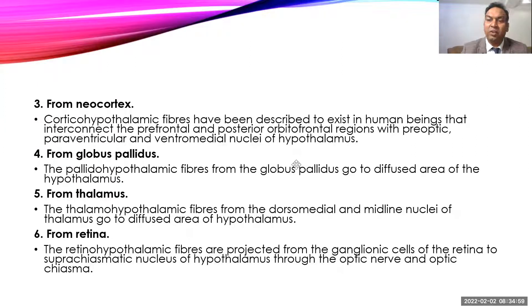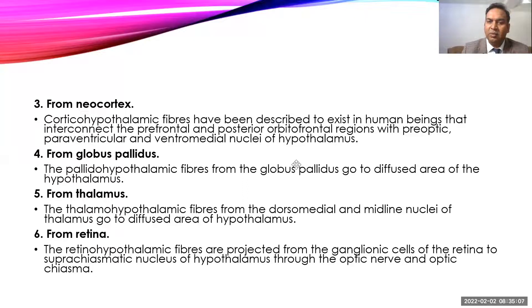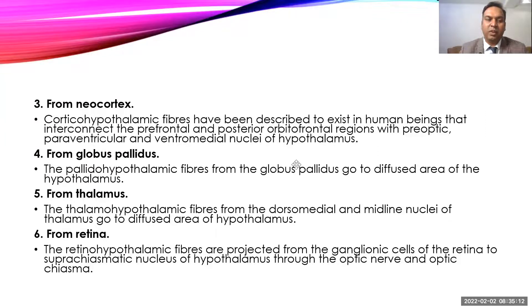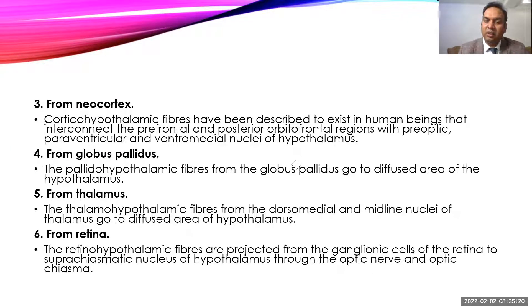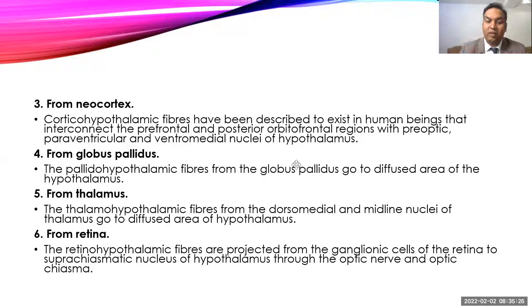The hypothalamus also gets thalamohypothalamic fibers from the dorsal and midline nuclei of the thalamus projecting to different hypothalamic areas. It also receives retinohypothalamic fibers projected from the ganglion cells of the retina to the suprachiasmatic nucleus of the hypothalamus through the optic nerve.